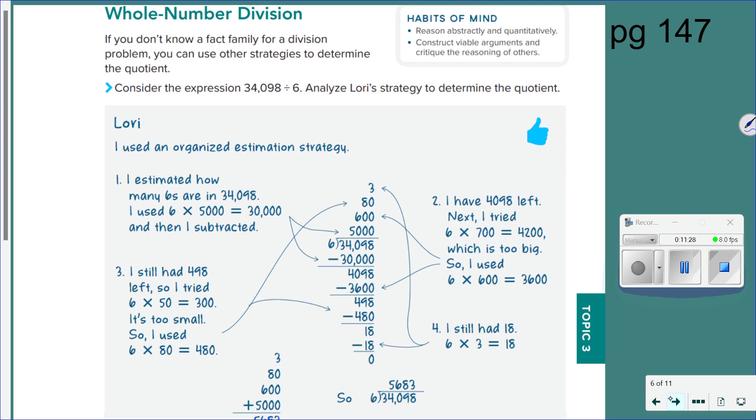Okay, let's go ahead and go to page 147. Ms. McShann hates this, so I'm going to cover this one, too. Okay. If you don't know a fact family for a division problem, you can use other strategies to determine the quotient. So, she's doing 34,098 divided by 6, and she's going to use what she's calling an organized estimation strategy. I've also heard this called partial products. Partial quotients. True, because we're dividing, not multiplying.